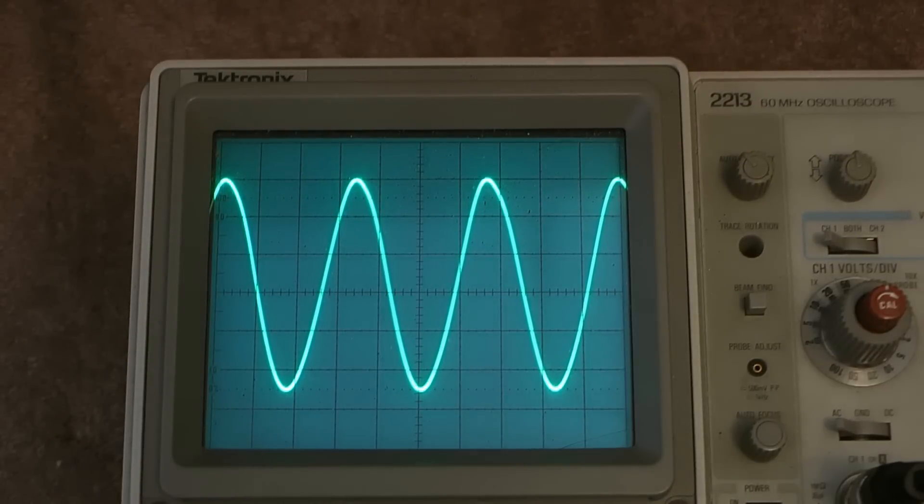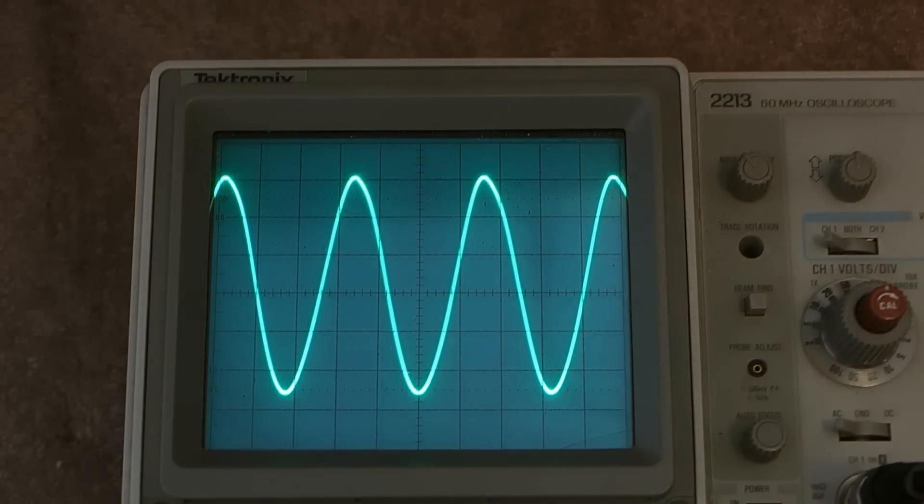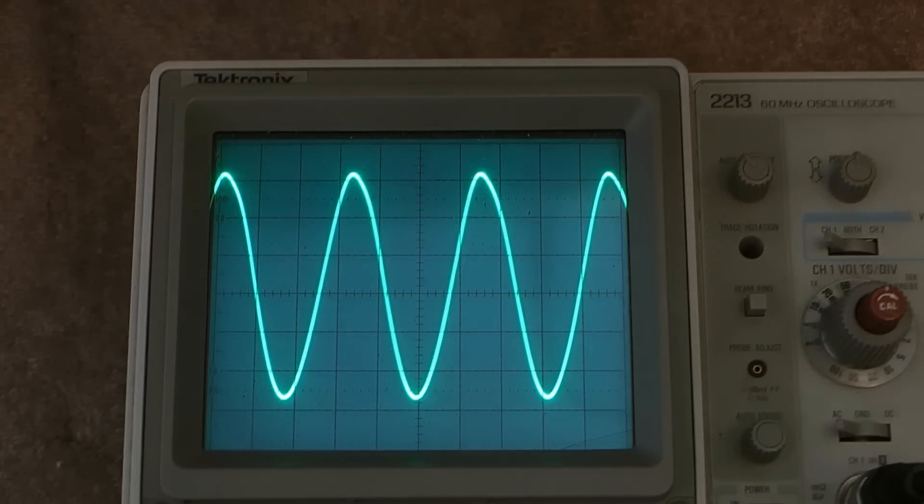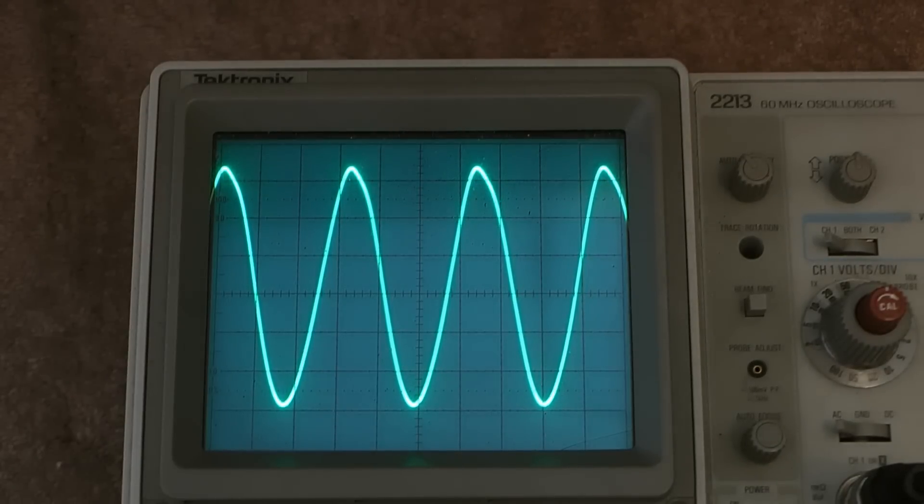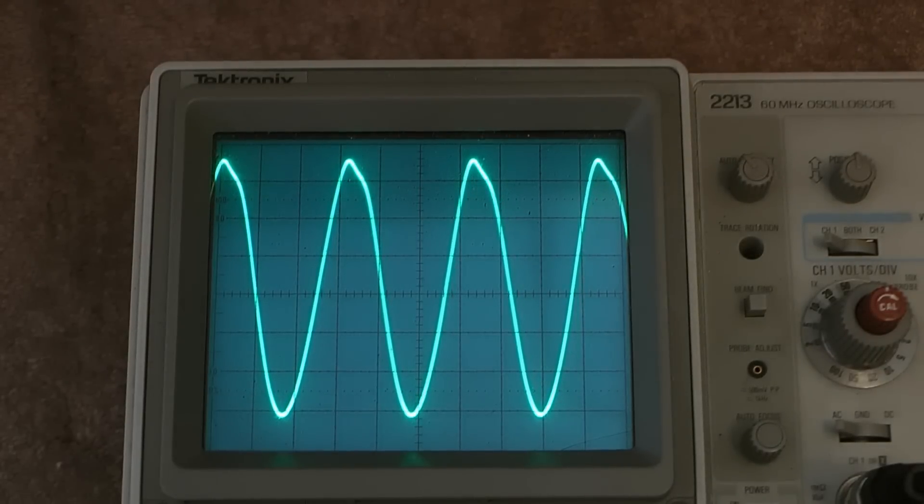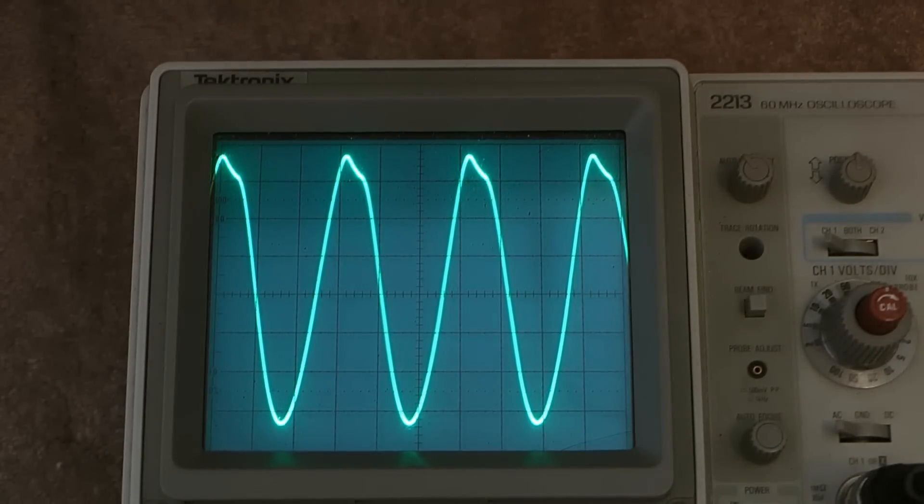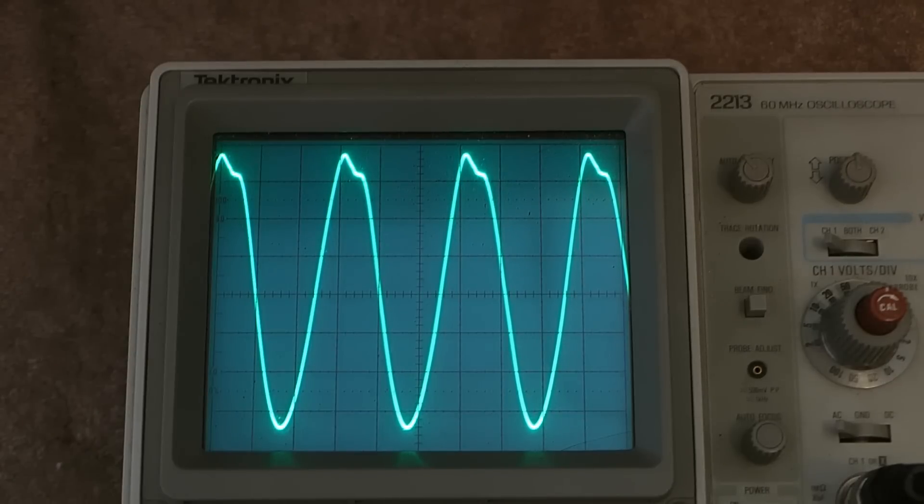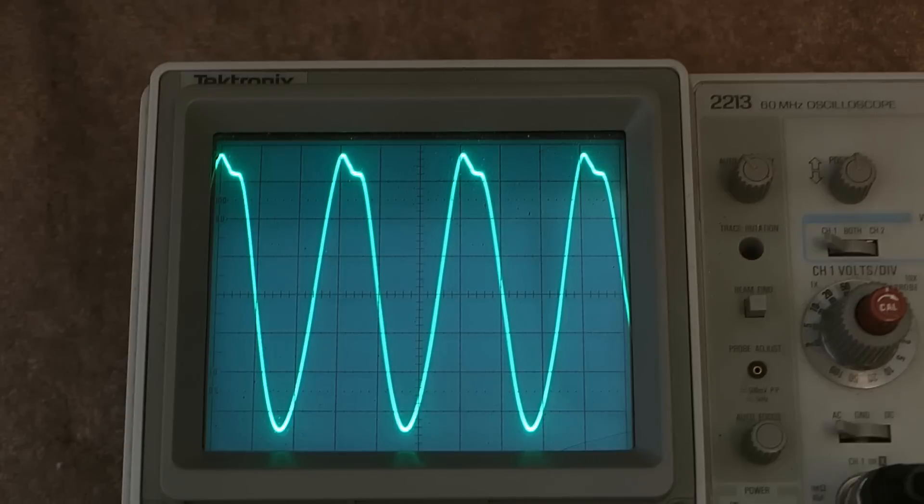Okay, now we're sweeping from 600 to 700 kHz. As it gets up towards 650 kHz, if you watch the top of the sine wave, it starts to deteriorate. There's some distortion there that's fairly severe.